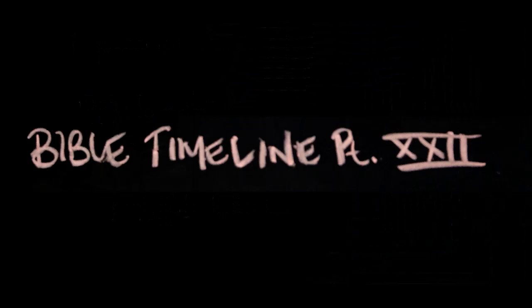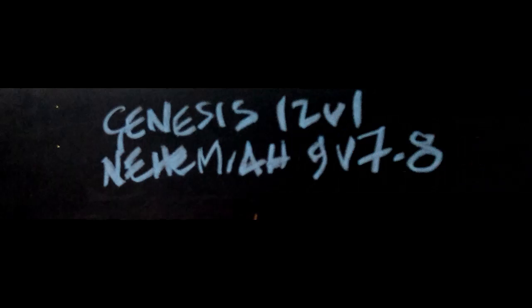Bible Timeline number 22. I want you to have two passages of scripture: Genesis chapter 12 in one hand, and Nehemiah 9 verses 7 and 8 in the other. Quick question — who was the shortest man in the Bible? Nehemiah! Anyway, on a more serious note, let's get to Genesis chapter 12 verse 1.